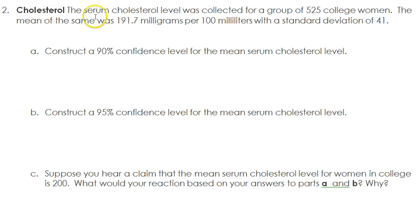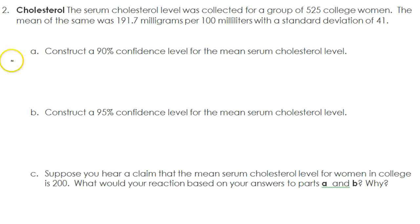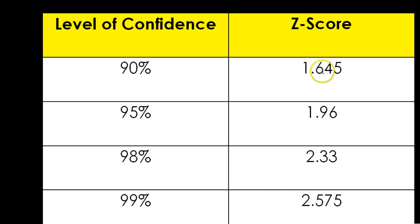Let's talk cholesterol. The serum cholesterol level was collected for a group of 525 college women. The mean of the sample was 191.7 milligrams per 100 milliliters with a standard deviation of 41. Construct a 90% confidence interval for the mean serum cholesterol level. So we're going to do plus or minus the z-score, and at 90% the z-score is 1.645.